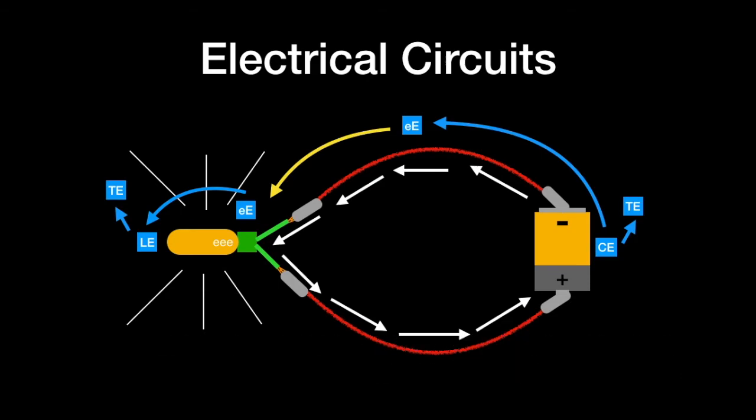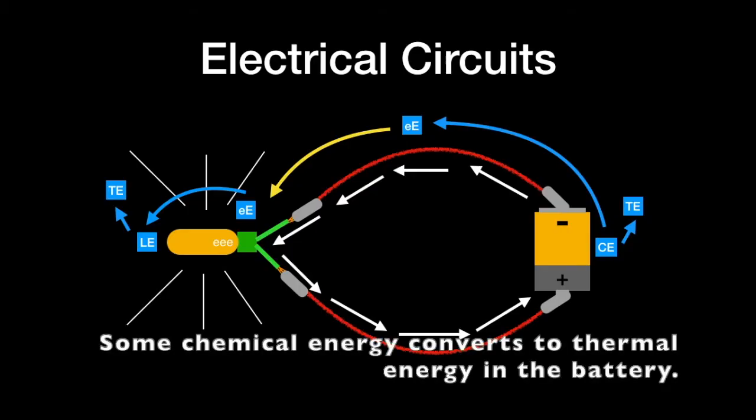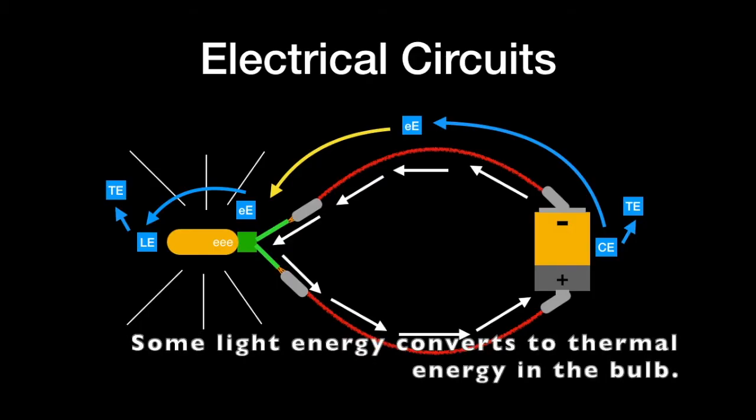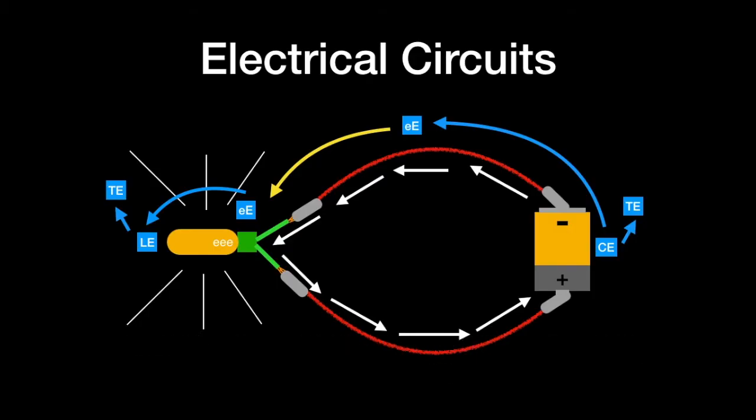Now, that is not the entire story. Notice there are arrows pointing away from the light bulb and away from the battery. If you use a device with a battery or light up a light bulb, you would notice it gets warm. This is thermal energy. That means that the light bulb is not 100% efficient. Not all of the chemical energy becomes electrical energy and it goes straight into making light. Some of that energy is being used to make heat or thermal energy.